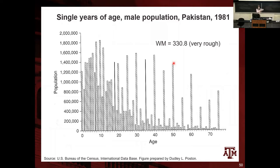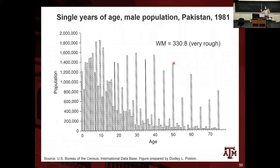If you see really pronounced preferences for only the zero digit, you should also consider aggregating age groups every 10 years. This is a simple exercise you can do just to see whether the age information you're collecting from a population is accurate.